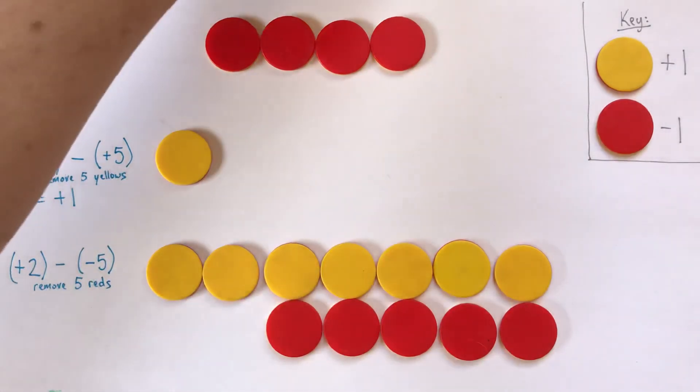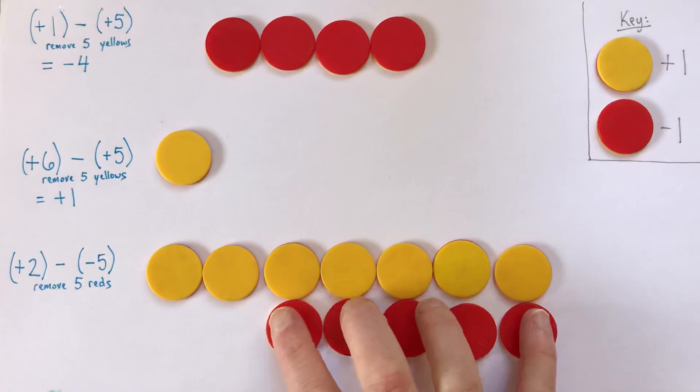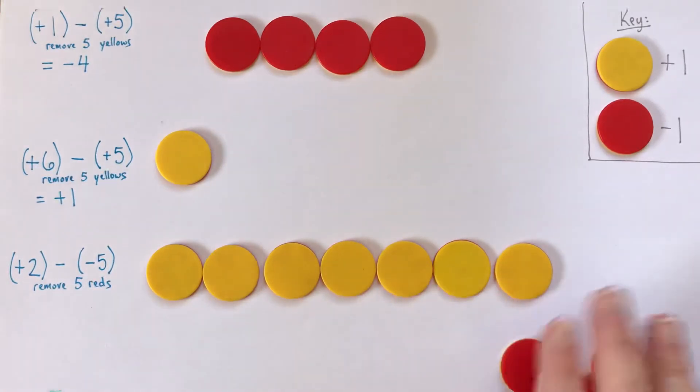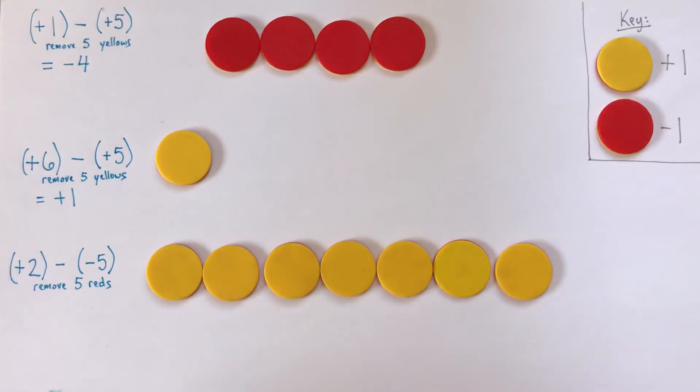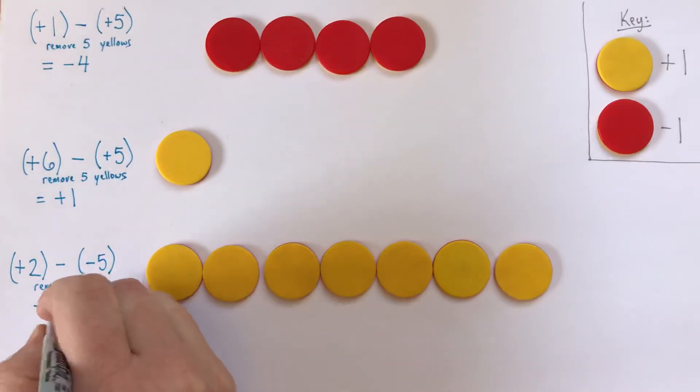So, I've done all this work, but I haven't done the subtraction yet. And the subtraction is going to be right here. I'm going to remove my negative 5. There. And so, my answer to the subtraction is positive 7.